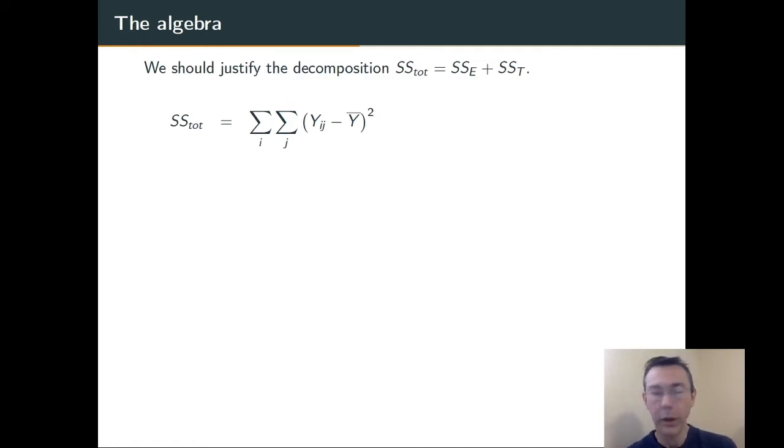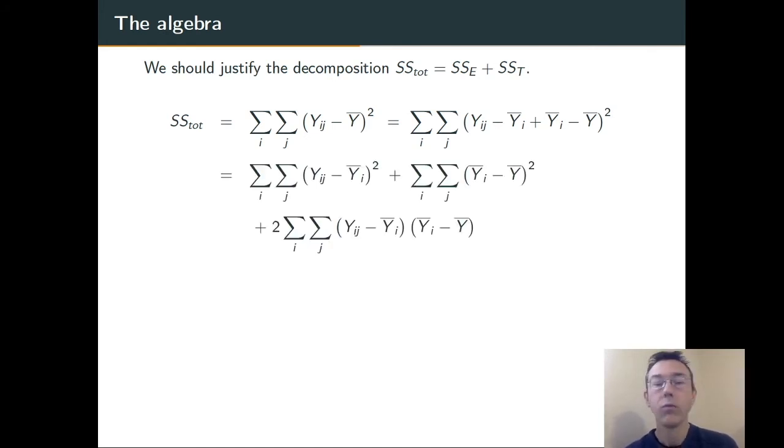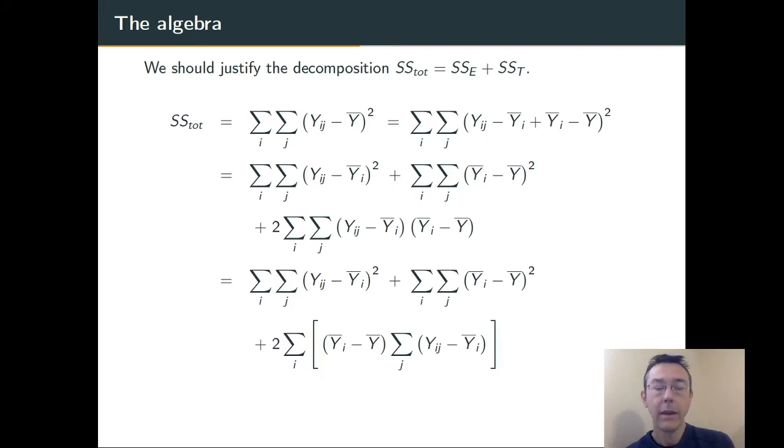I'm going to move through the algebra pretty quickly, but I do want to have it here. It's worth, since this is a mathematical introduction, it's worth doing. There's the definition of the Total Sum of Squares, the Total Variability in the data set. We're going to add and subtract the sample means in the different groups. Regroup things by foiling things out. And then, magically, that bottom term, the third term in that summation, is going to go away. What you're seeing there at the bottom is actually the error sum of squares and the treatment sum of squares. We do actually get the result we claimed we would get.